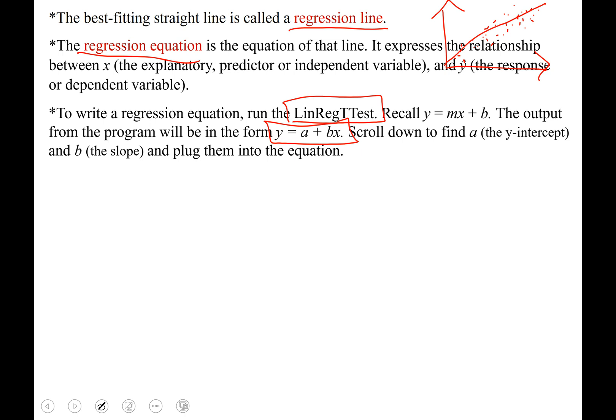You might recall that the equation of a line in slope-intercept form is y equals mx plus b, and this is the same. The coefficient in front of x is the slope, and the constant is the y-intercept. Scroll down on your output screen, find a and plug it into the equation as the y-intercept. Then find b and plug it in as the slope. You'll have your regression equation.